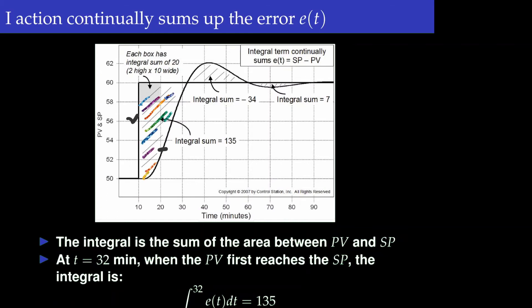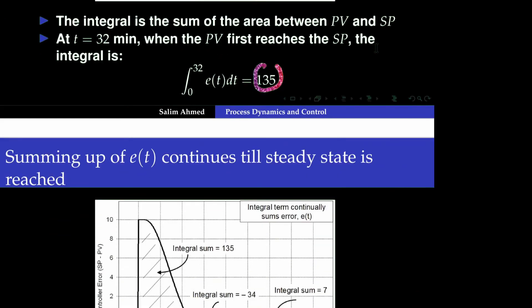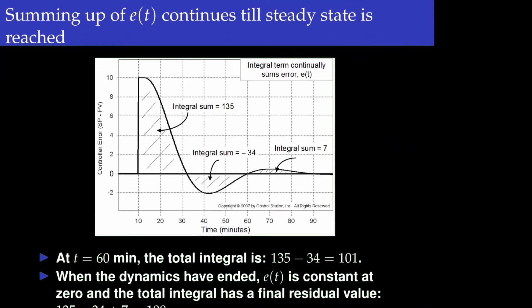At around time 32, this total area sums to approximately 135 units. The error curve represents the difference between the set point and the output. At time 32, the area is around 135 units, but then the output goes beyond the set point, creating a negative area of approximately negative 34. So up to that point, the net area is around 101 units.